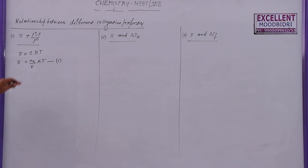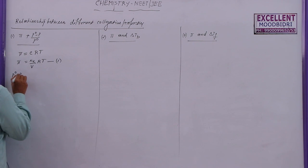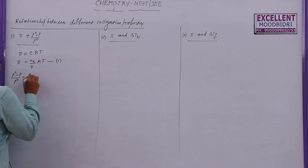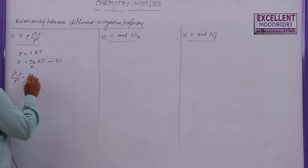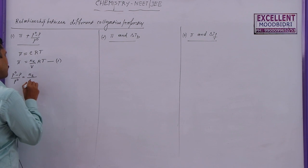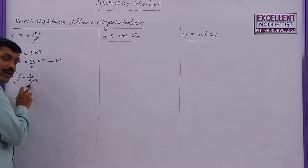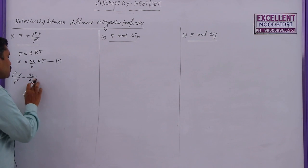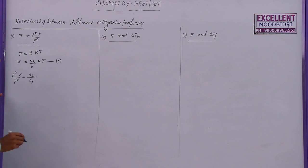Next, for relative lowering of vapour pressure, we know that the formula is (P₀ − P)/P₀ = n₂/(n₁ + n₂). But for a dilute solution, n₂ is very less compared to n₁, so we take (P₀ − P)/P₀ = n₂/n₁ for a dilute solution.